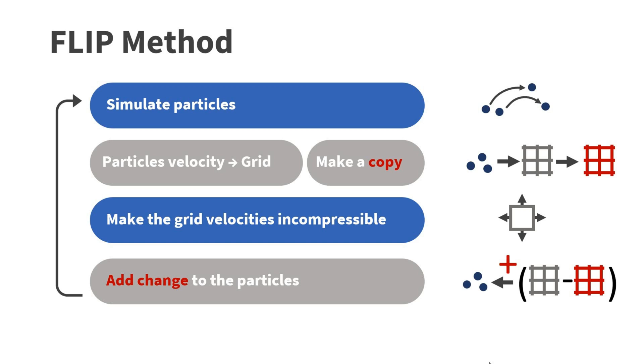The FLIP method reduces this problem. FLIP stands for fluid implicit particle. As in the PIC method, we first simulate the particles. We also transfer the velocities of the particles to the grid. Before the solver modifies the grid velocities, we store a copy of them. Next, we make the velocity field incompressible as before. However, instead of transferring the velocities of the grid to the particles, we add the velocity changes to the particle velocities. This technique reduces the smoothing of the particle velocity substantially. However, the velocity field stored on the particle builds up a substantial amount of noise.